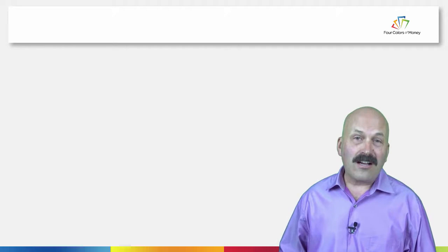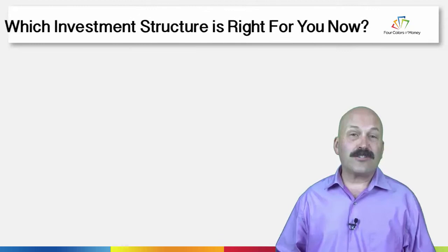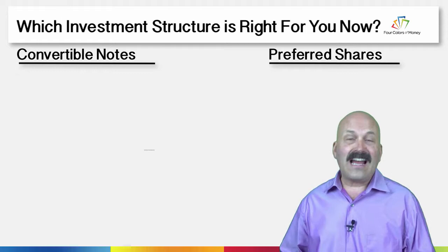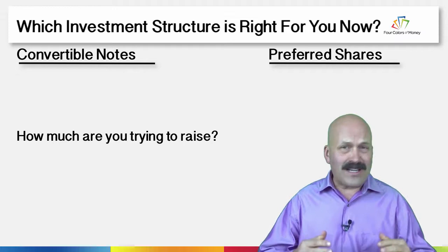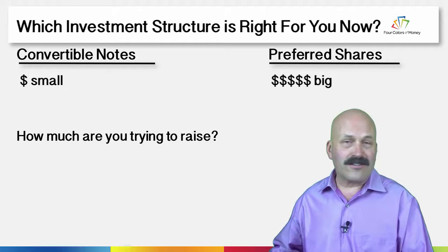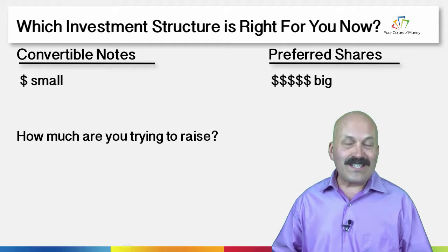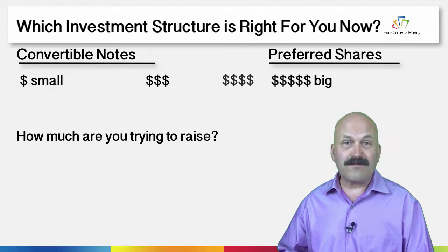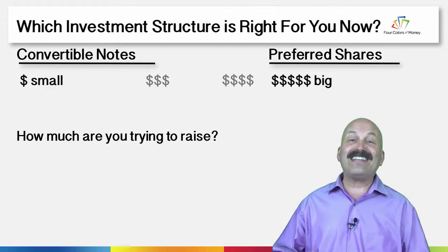I'm going to talk about some of these alternatives in the next video. I'd like to conclude this one by helping you answer the question: which investment structure is right for you now — convertible notes or preferred shares? I'm going to answer that with four questions. First, how much are you trying to raise now? If you're just trying to raise a small seed amount, then a convertible note or alternatives are a good structure. Whereas if you're trying to raise many millions, preferred shares are definitely the way to go. If you're in the middle, do some research on your marketplace and target fundraise size to see how many deals use convertibles versus preferred shares, because that break-even point varies from market to market.